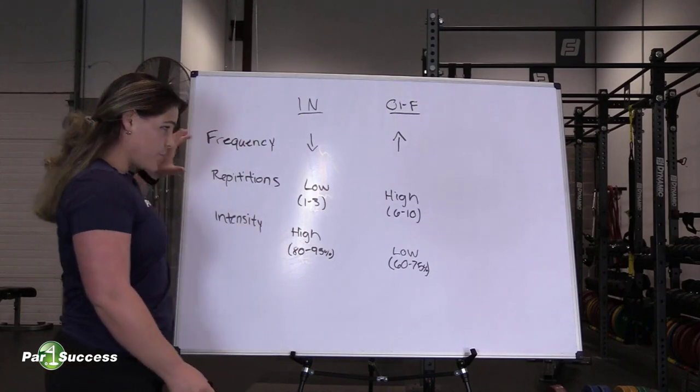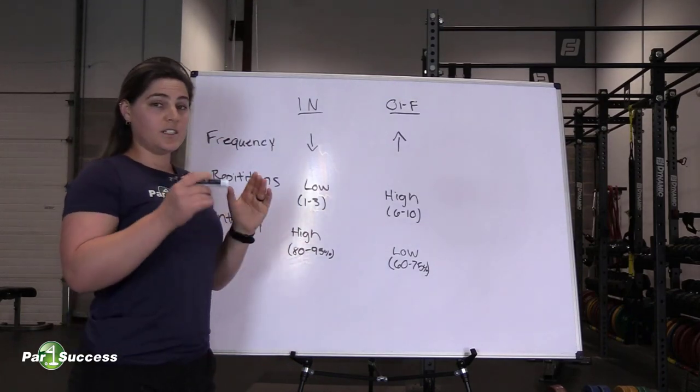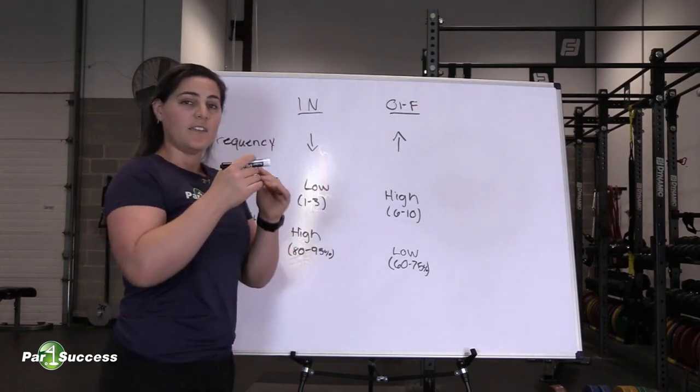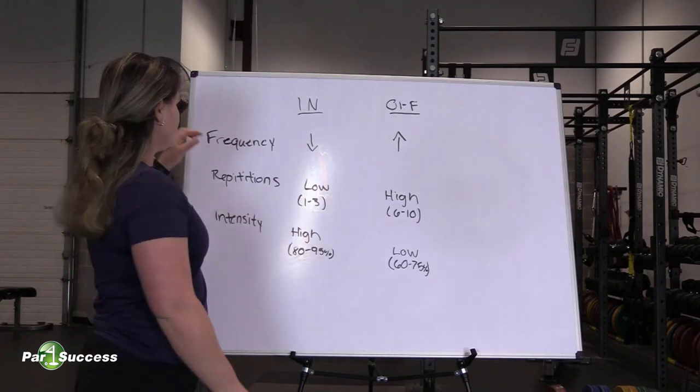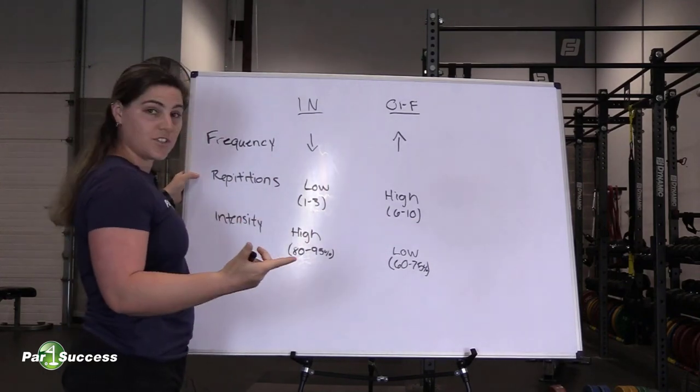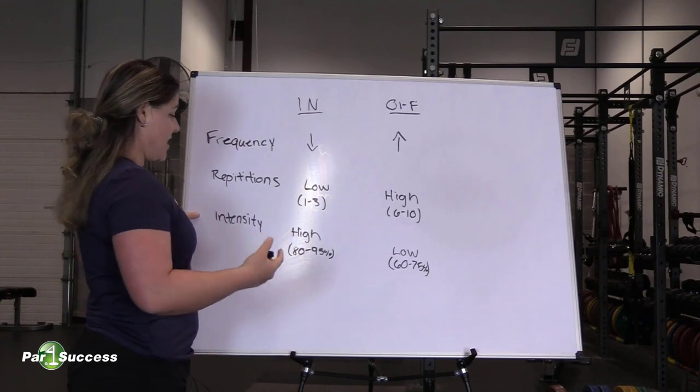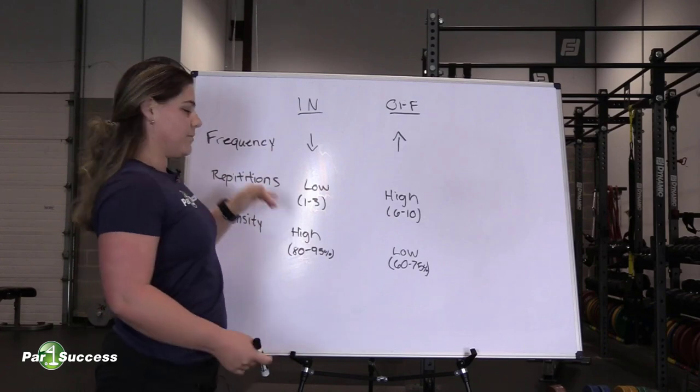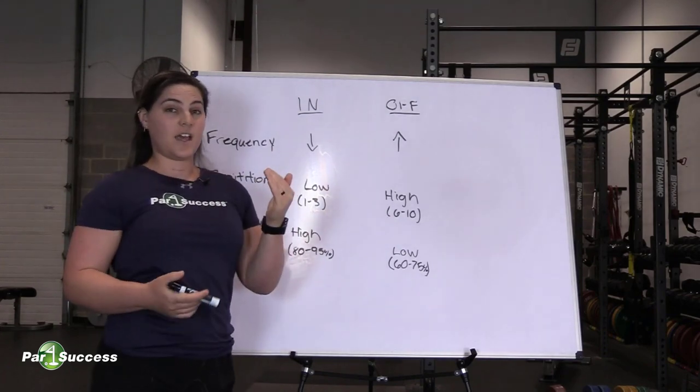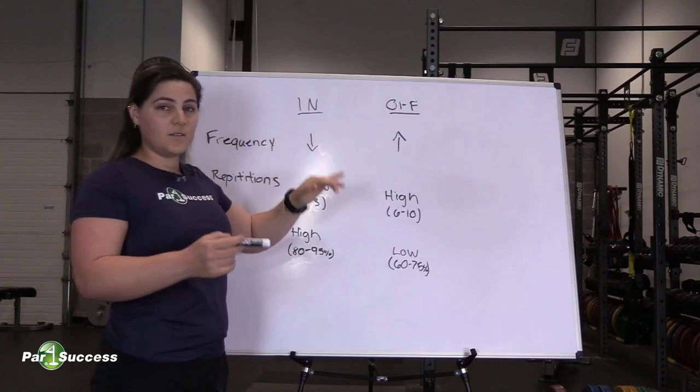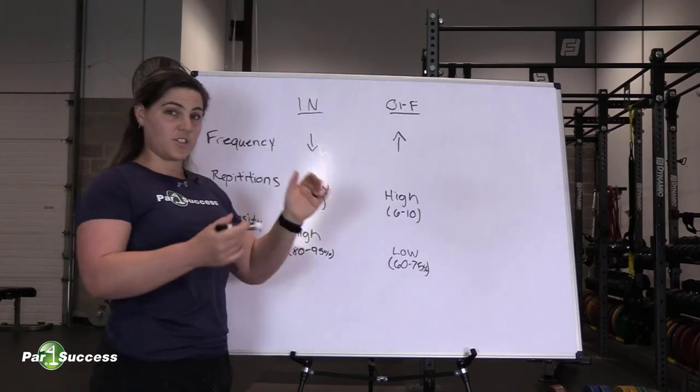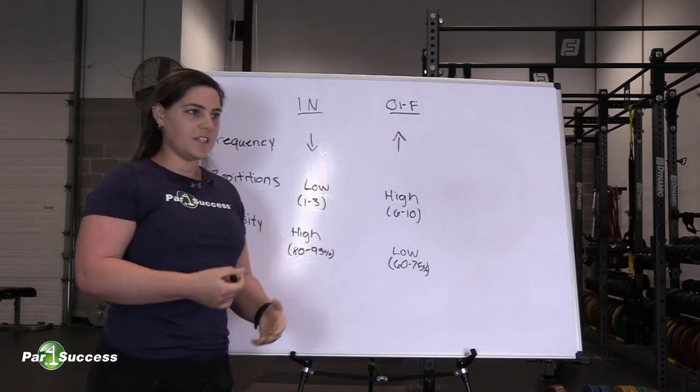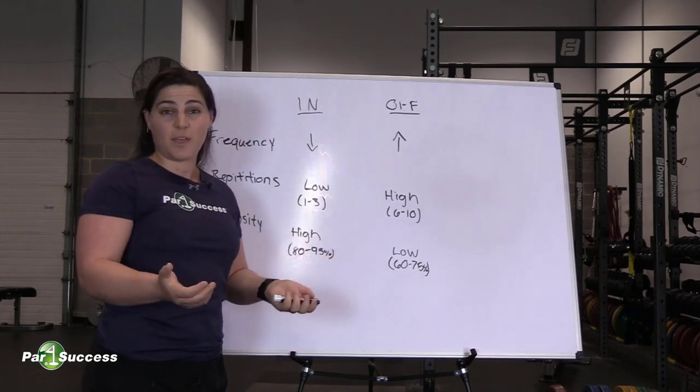So the takeaways here: three main things that you can do to maximize your golf performance is know your in-season, know your off-season. And then within those seasons, look at the frequency you're in the gym, the repetitions of your exercises, and the intensity of those exercises. In-season, you're going to be in the gym less, you want to keep your reps on the lower side and your intensities on the higher side. In the off-season, more time in the gym, you want your repetitions on the higher side, intensities on the lower side to help drive and build fitness, conditioning, and muscle growth.